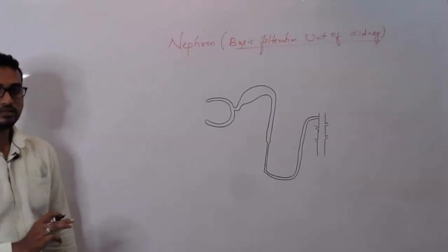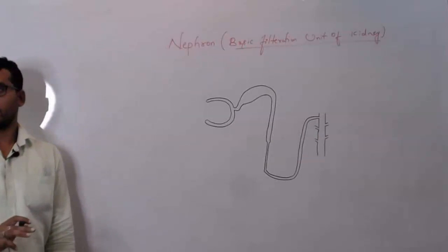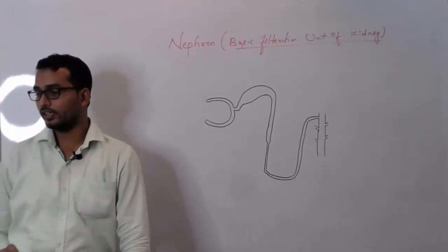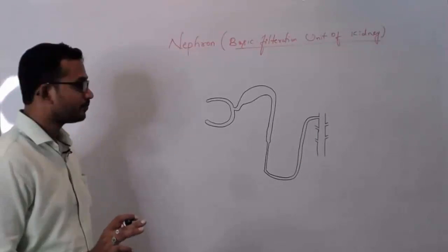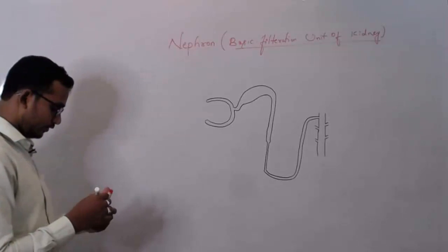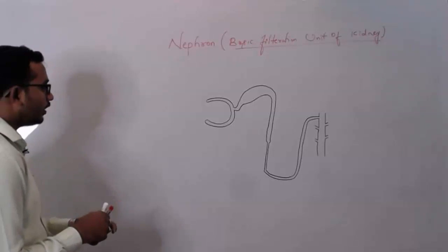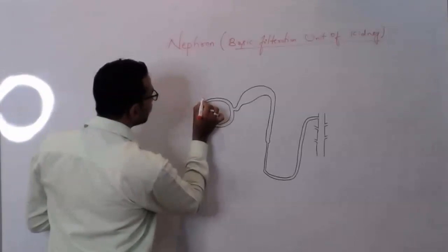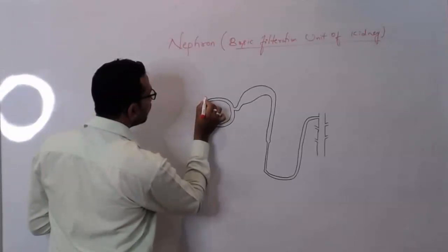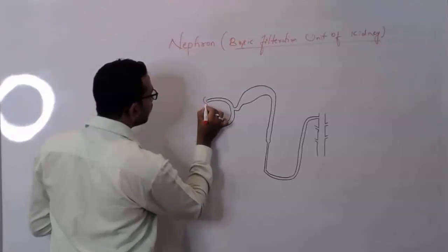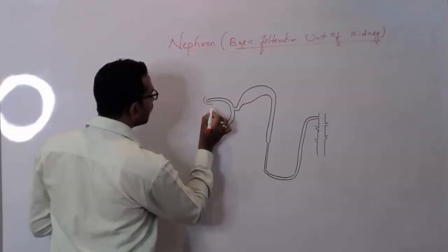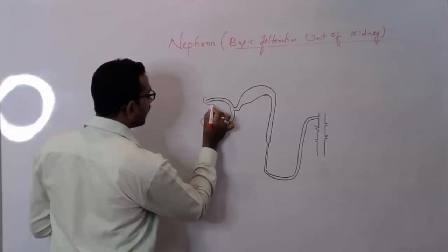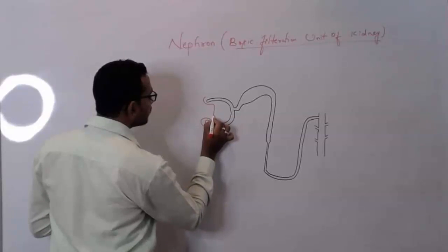Is this clear? I hope you have understood in a clear manner. Any doubt? No. Very good. Now what you can do — observe. Just from here, from this part, come till here.